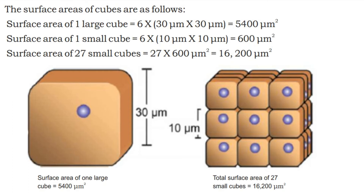The surface area of 27 small cubes: each small cube has a surface area of 600 μm², giving a total surface area of 27 × 600 μm² = 16,200 μm². So the 27 small cubes together have a total surface area of 16,200 μm² compared to 5,400 μm² for the large cube.